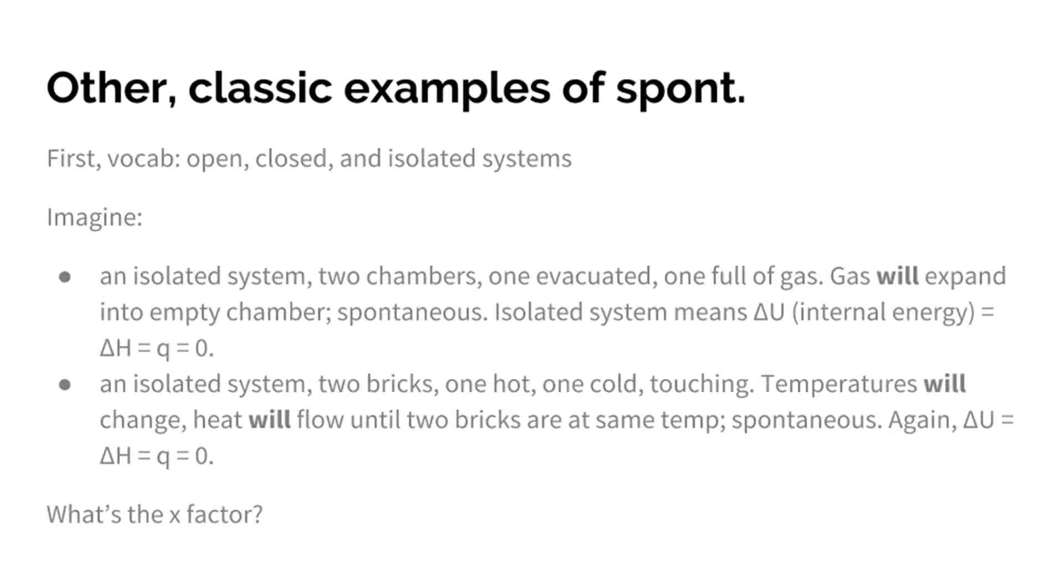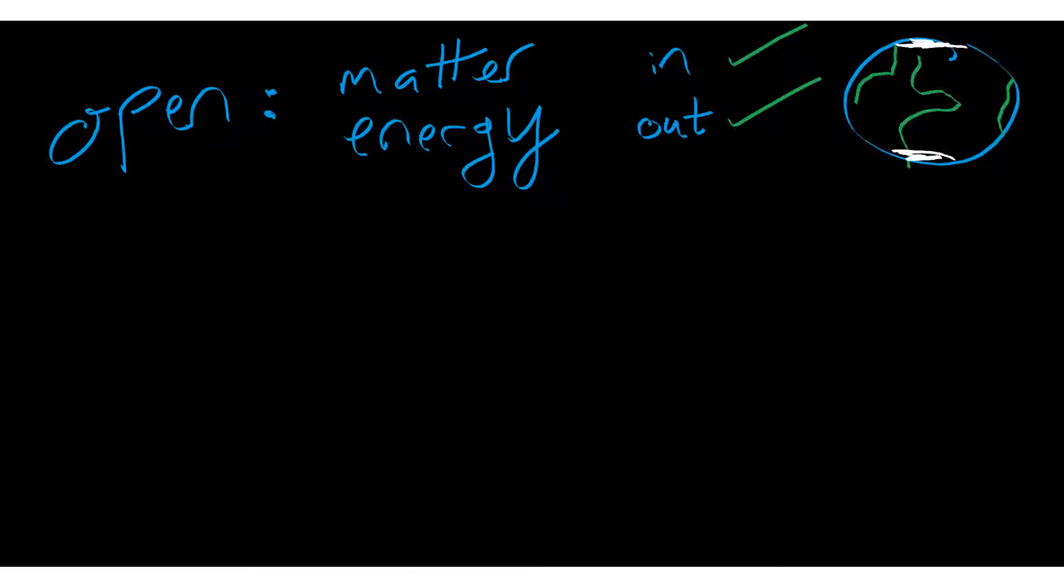First, let's talk about some basic vocab: open, closed, and isolated systems. An open system would be something like the planet Earth. Matter and energy are free to move into and out of the system. There's nothing stopping anything from going in or out of the system. Good thing too, or we'd be cooked.